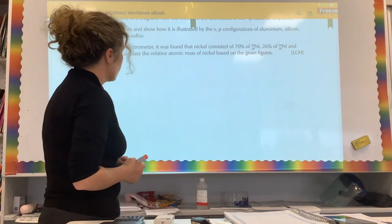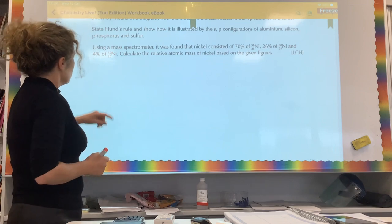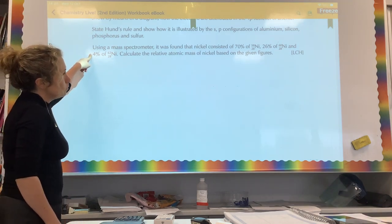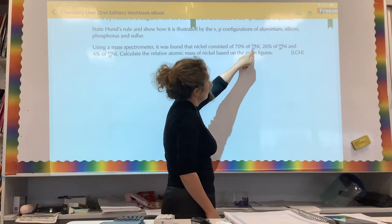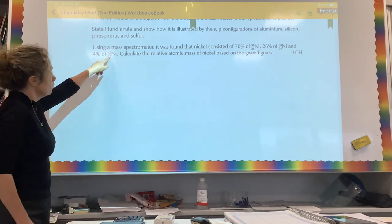So here's your calculations. This is a lead insert exam question here. Using a mass spectrometer, it was found that nickel consisted of 70% nickel-58, 26% nickel-60, and 4% nickel-62.